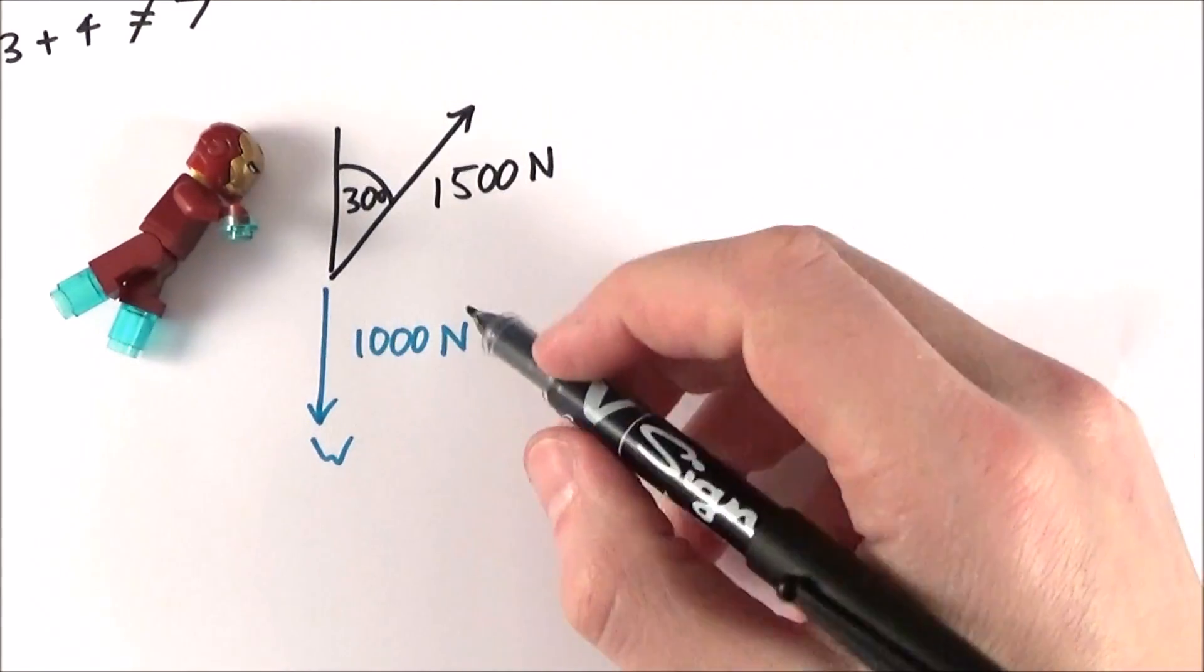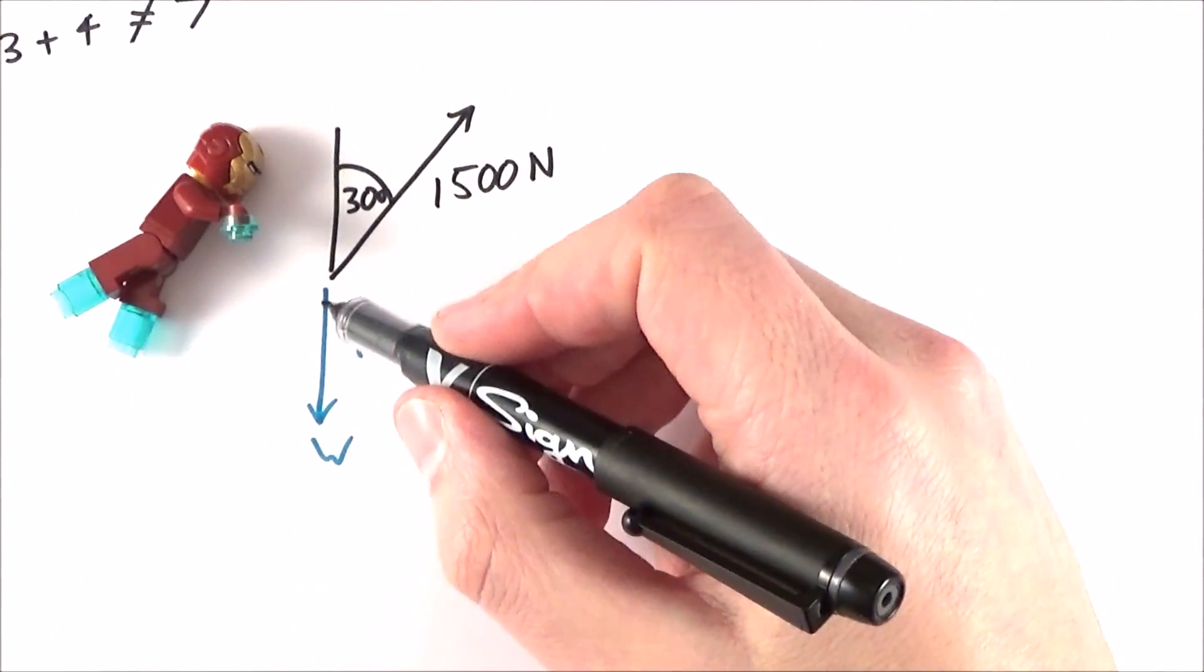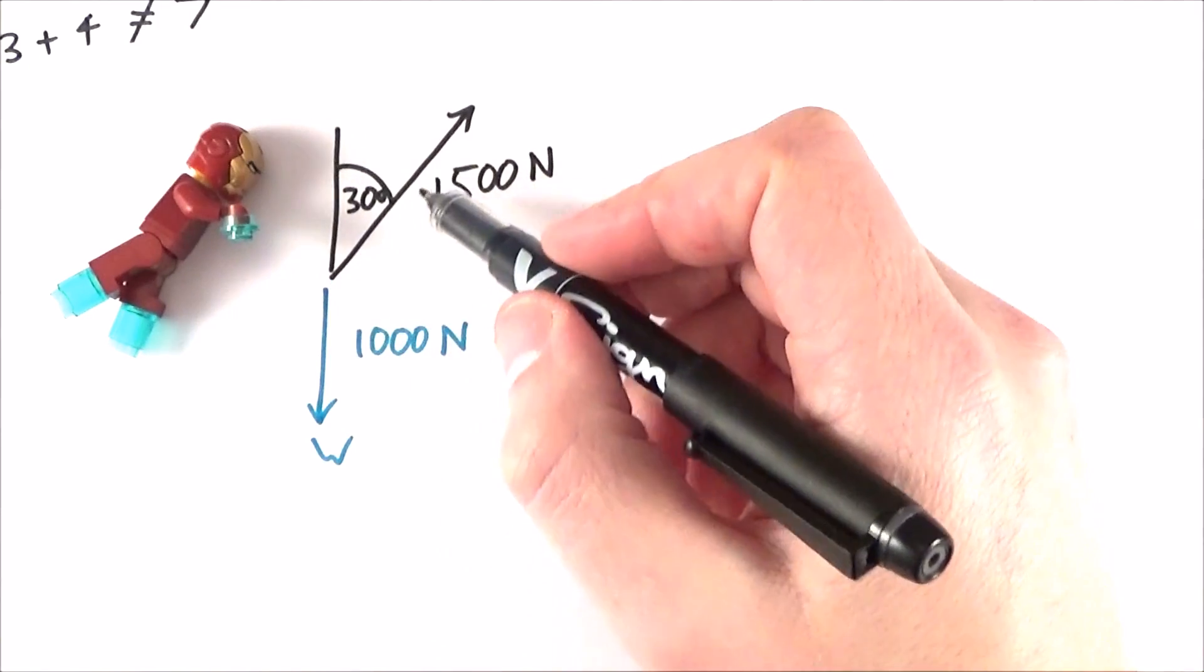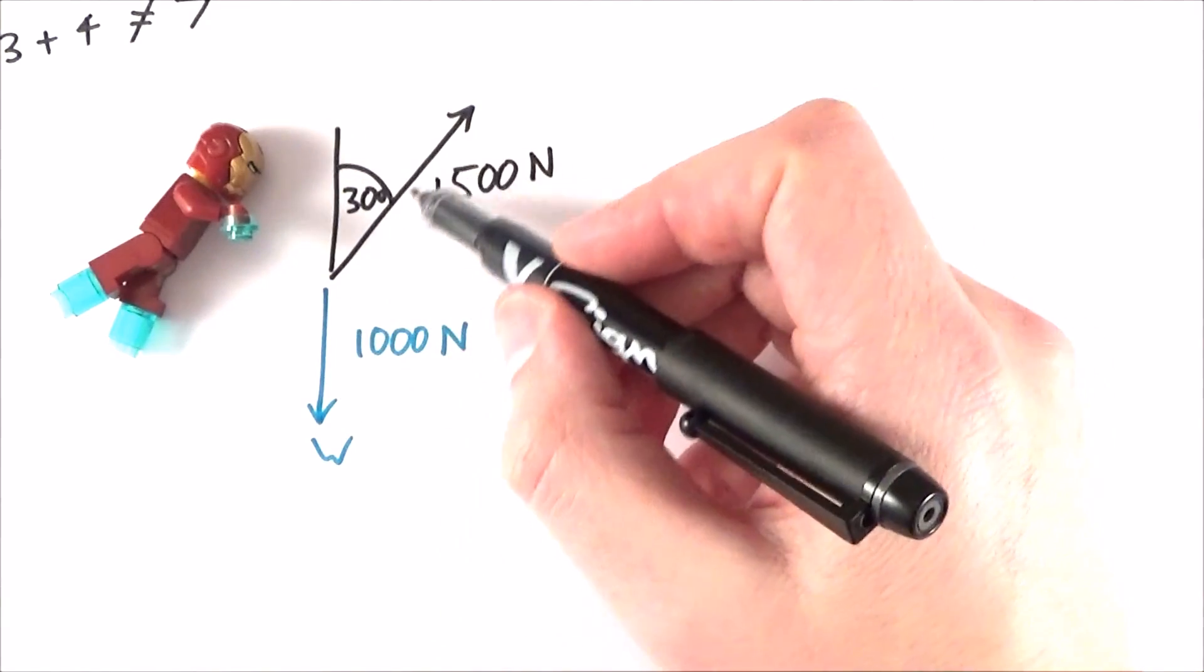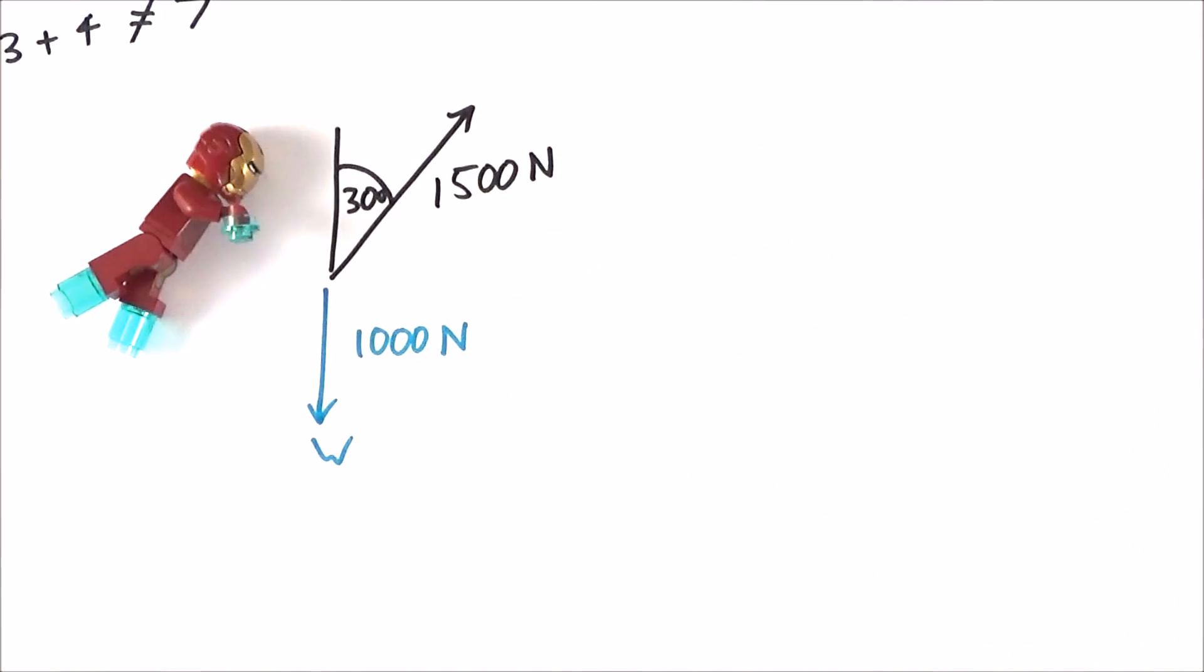We represent a vector with an arrow that is proportional to the length and in the right direction. We can see here that maybe the black arrow is bigger than the blue arrow and it's actually in a different direction. Now by adding them together, effectively what we can do is we can just take them and move them around.